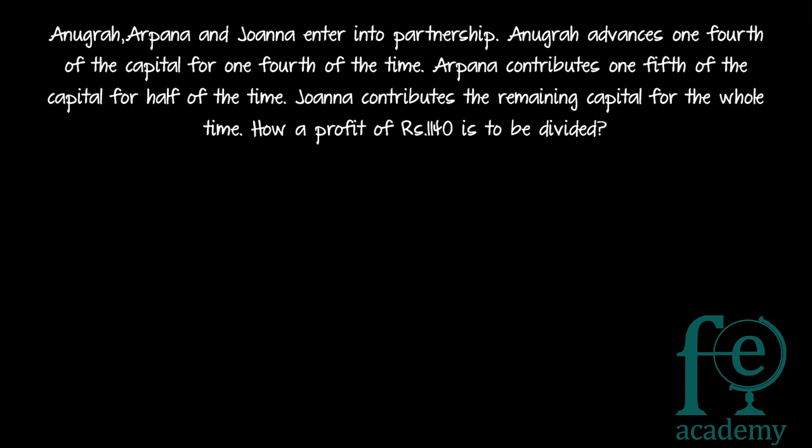Hi friends, welcome to today's video. Today's question is: Anigradh, Arpanna and Johanna enter into partnership. Anigradh advances one-fourth of the capital for one-fourth of the time. Arpanna contributes one-fifth of the capital for half of the time. Johanna contributes the remaining capital for the whole time. There are three people in this partnership — Anigradh, Arpanna and Johanna.